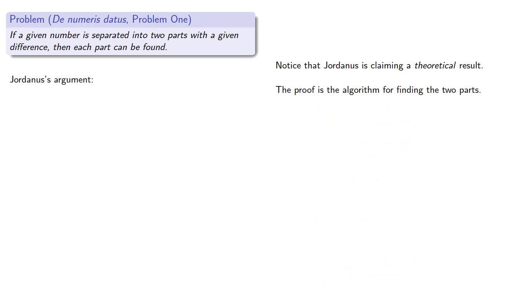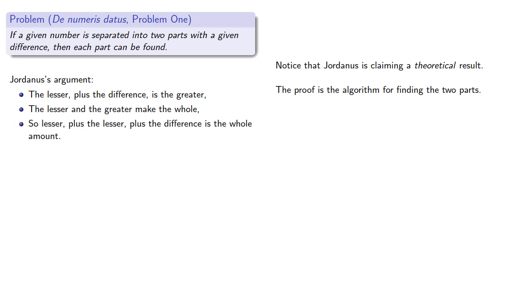The proof is the algorithm for finding the two parts. So Jordanus' argument is that the lesser plus the difference is the greater. The lesser and the greater make the whole. So the lesser plus the lesser plus the difference is the whole amount.